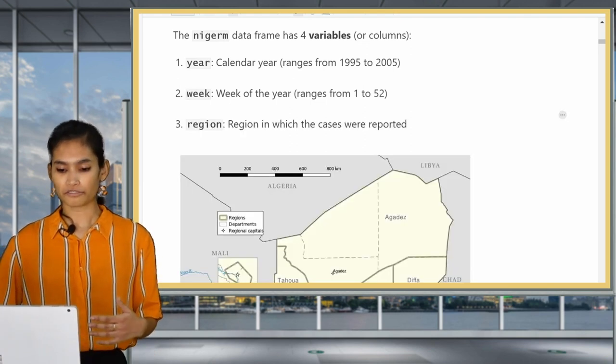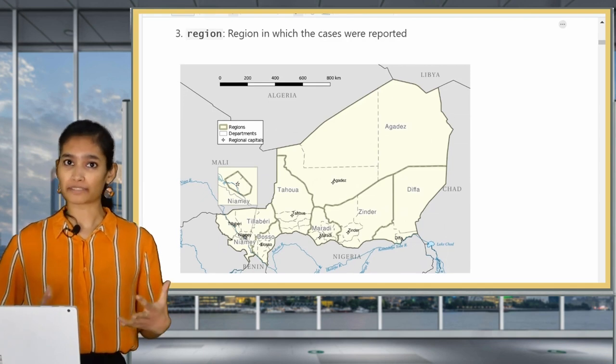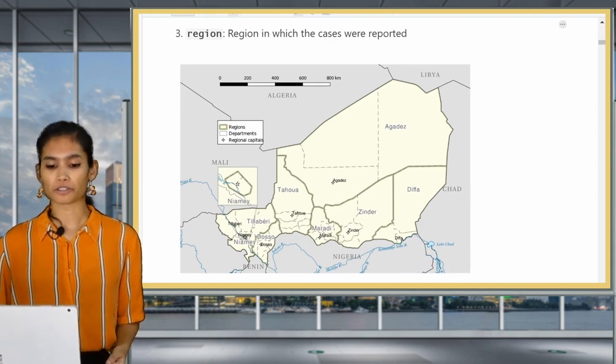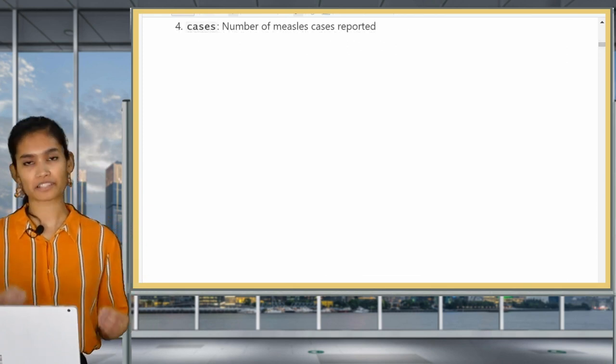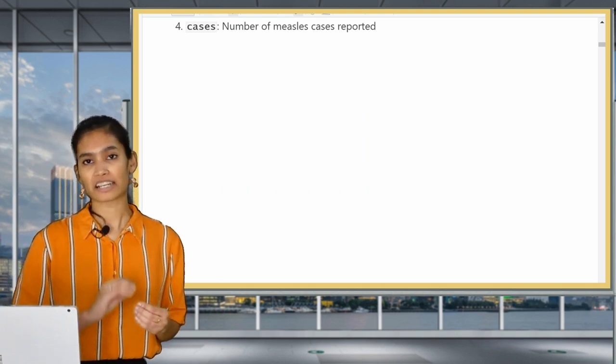Let's now take a moment to look through the data. Now we put the Niger M data frame you can see that there are four variables or columns and 4576 rows. The four variables are as follows. The year variable shows us the calendar year in which the data was recorded which ranges from 1995 to 2005.